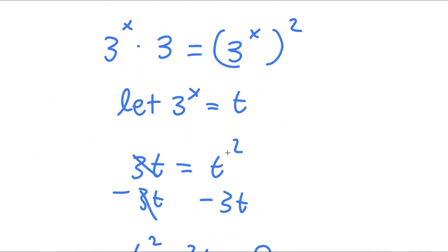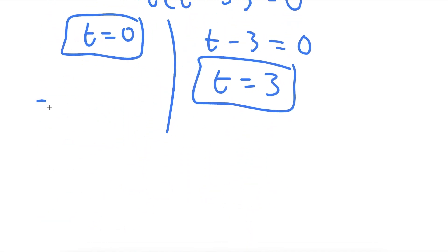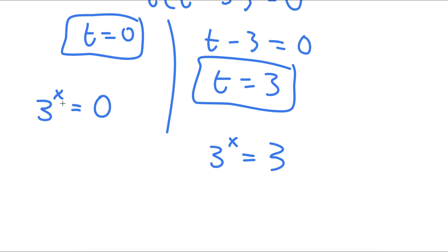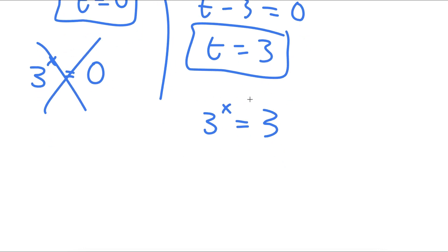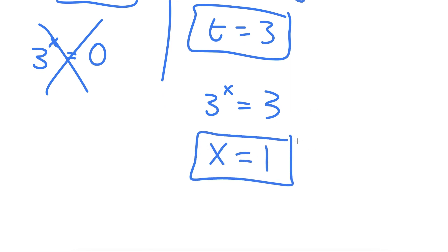Remember, we set 3 to the power of x equal to t. So I have two equations: 3 to the power of x equals 0, and 3 to the power of x equals 3. For 3 to the power of x equals 0, you can't take a power of a number and make it equal to 0 — nothing to any power equals 0. For 3 to the power of x equals 3, since 3 to the power of 1 equals 3, x is equal to 1, and this is my answer.